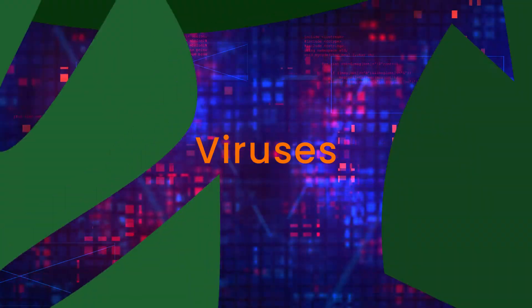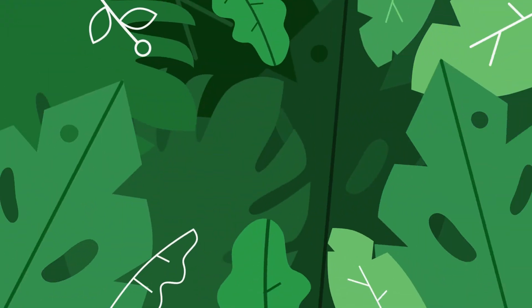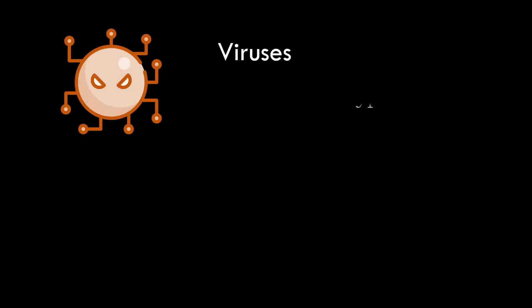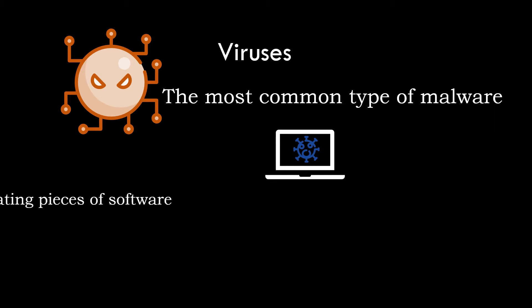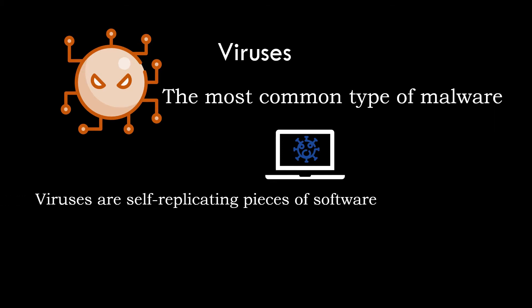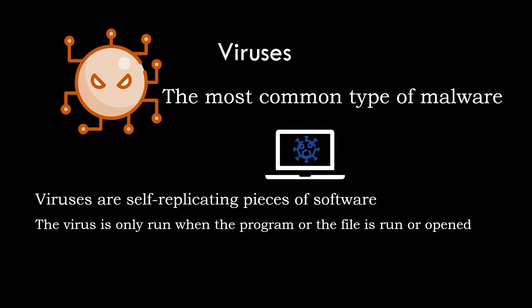The first type is viruses. Viruses are self-replicating pieces of software that, similar to a biological virus, attach themselves to another program, or in the case of macro viruses, to another file. The virus is only run when the program or the file is run or opened. It is this which differentiates viruses from worms. If the program or file is not accessed in any way, then the virus will not run and will not copy itself further.